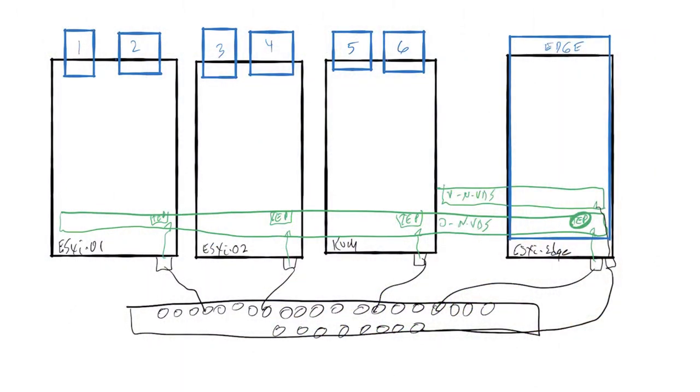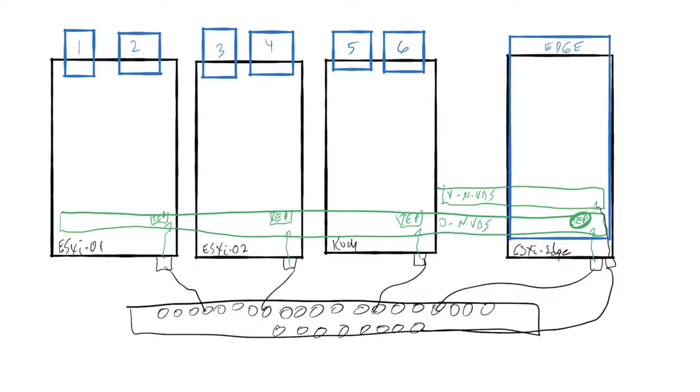And they're on three hosts or three transport nodes that are hypervisor-based transport nodes: ESXi-01, ESXi-02, and KVM. And then I've got an edge, an ESXi, so a VM-based edge node over on the far right that has two NVDS attached to him.